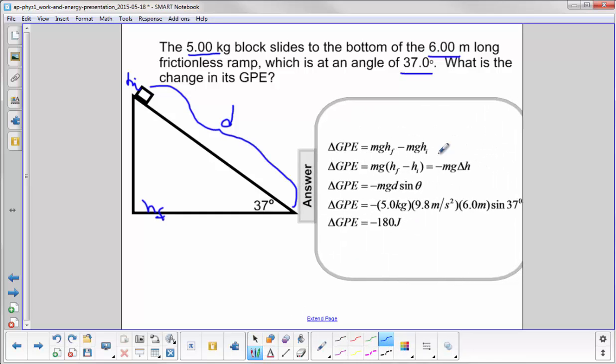So gravitational potential energy is the difference in the heights times mg. Now in this case, look at the negative sign here. What happened there? Well, hf is going to be zero, and h initial is some positive value. So we'll have a negative here.